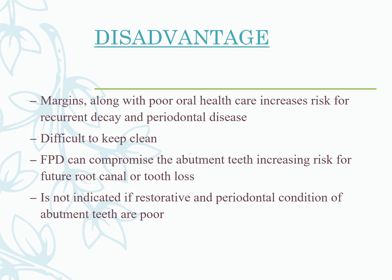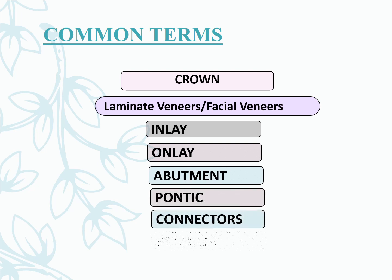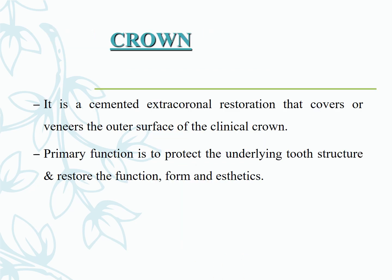Common terms in FPD include crown, veneer, inlay, onlay, abutment, pontic, connector, and retainer. These will be covered in detail separately. A crown is a cemented extracoronal restoration that covers the outer surface of a clinical crown — essentially a restoration which covers the full surface of a tooth.